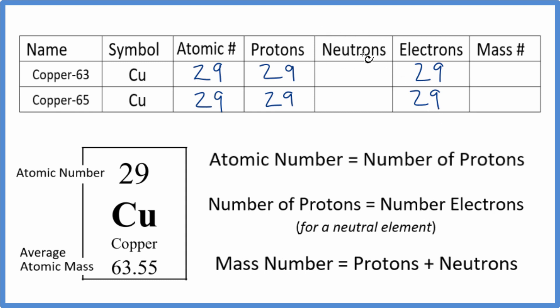Often you'll be given the number of neutrons or the mass number, and you can figure out the other one based on that information. If not, sometimes you're given the isotope name. So this is copper-63, that means it has a mass number of 63. Copper-65 has mass number 65.